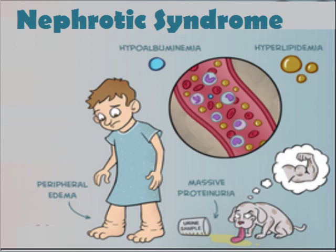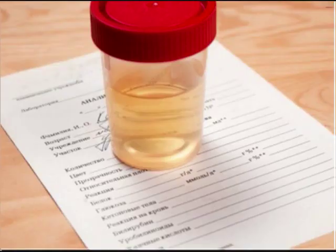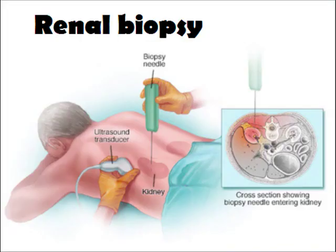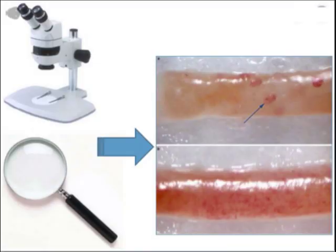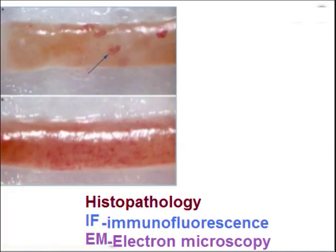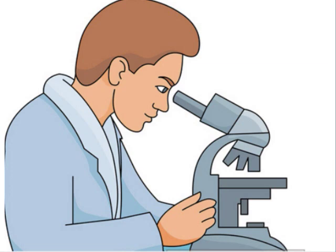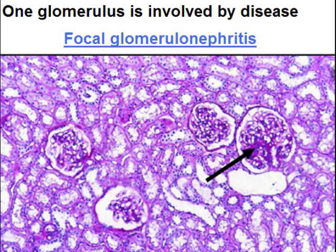Now, a clinical scenario: an adult patient, 25 years of age, presented with nephrotic syndrome — peripheral edema, periorbital edema, and 24-hour urine showing 3.5 grams per 24-hour protein. A renal biopsy was advised. The renal biopsy sample is divided into 3 portions: one for histopathology, one for immunofluorescence, and one for electron microscopy.